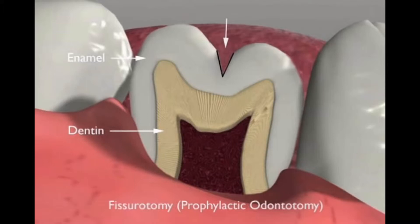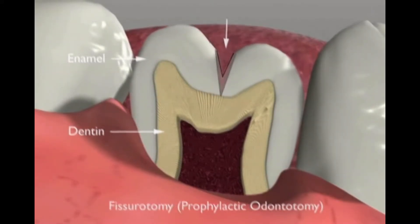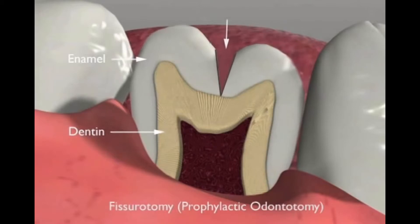More commonly, however, the deepest pits and fissures do extend close to or into the dentin layer, and this procedure must be followed by placement of a filling of some type. The procedure must also be performed by a dentist, since it involves removal of tooth structure.